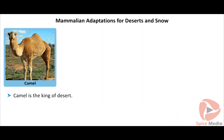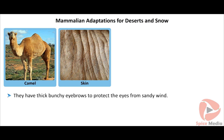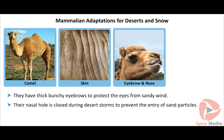Camel is the king of the desert. The skin of camels is doubly thick and contains water-storing osmotic cells to conserve water for their desert life. They have thick, bunchy eyebrows covering the eyes to protect them from sandy winds. Their nasal holes can be closed during desert storms to prevent the entry of sand particles.